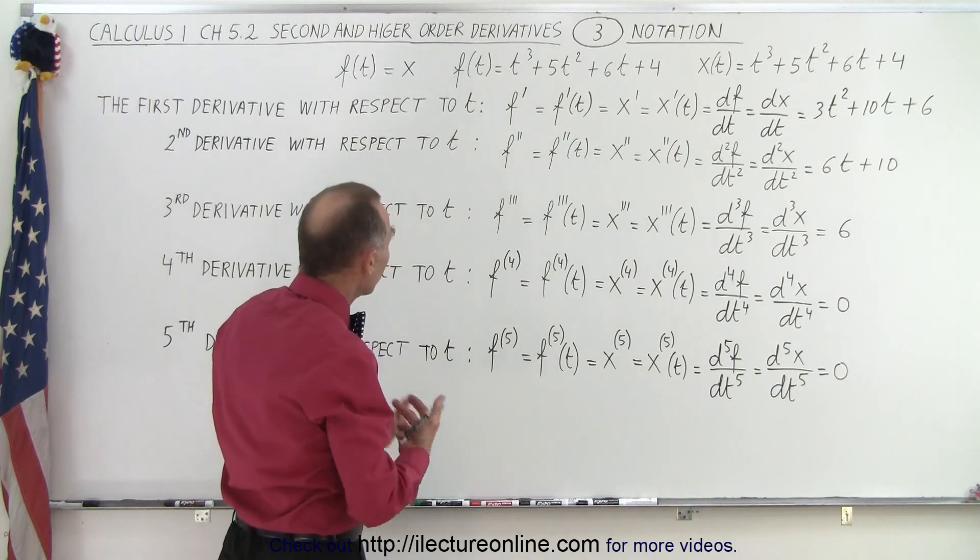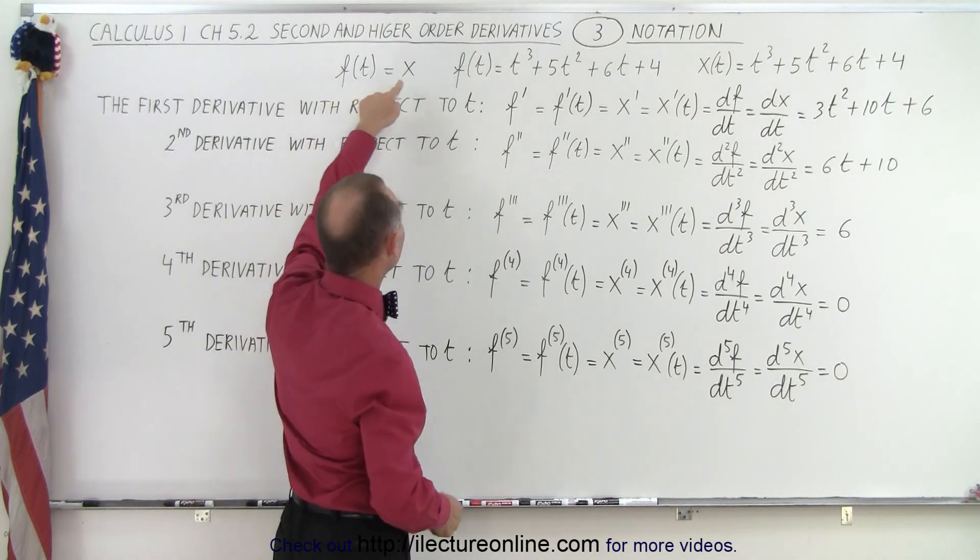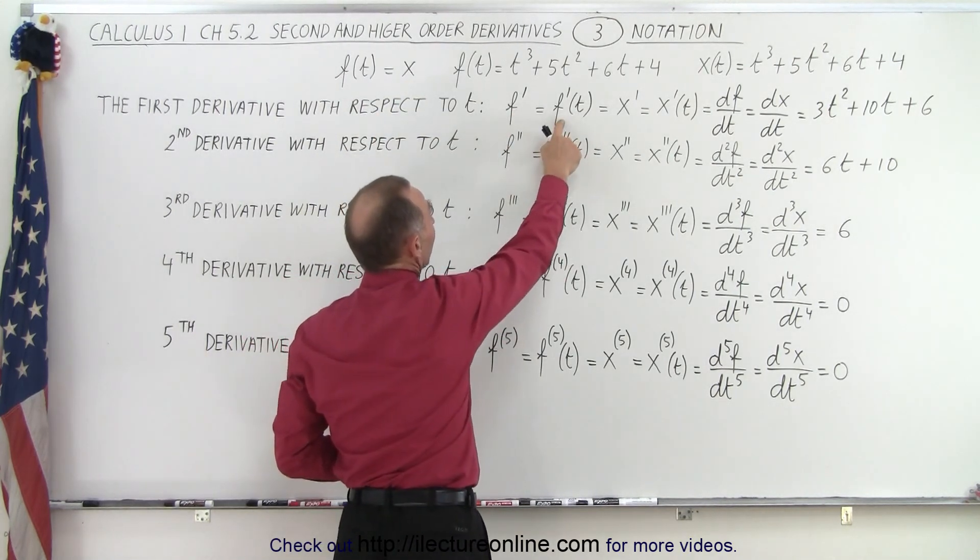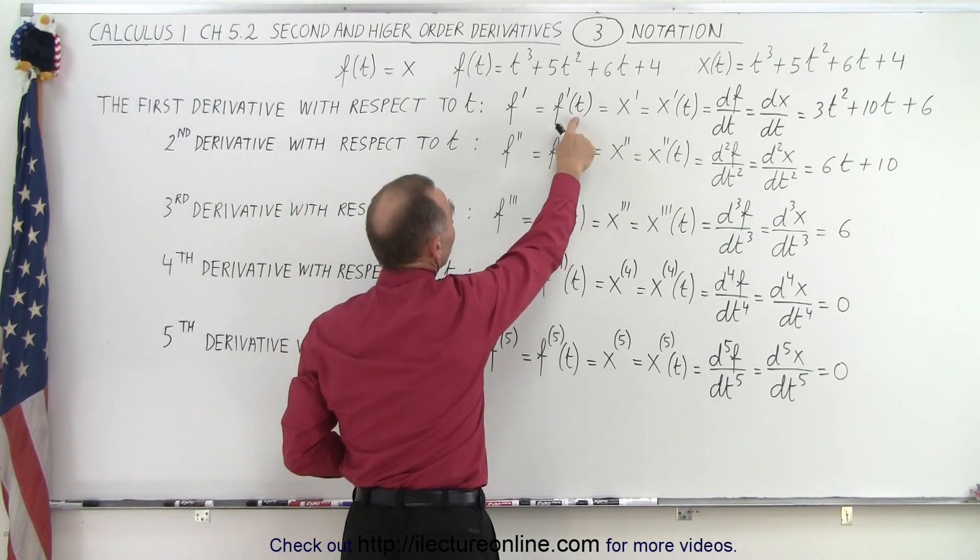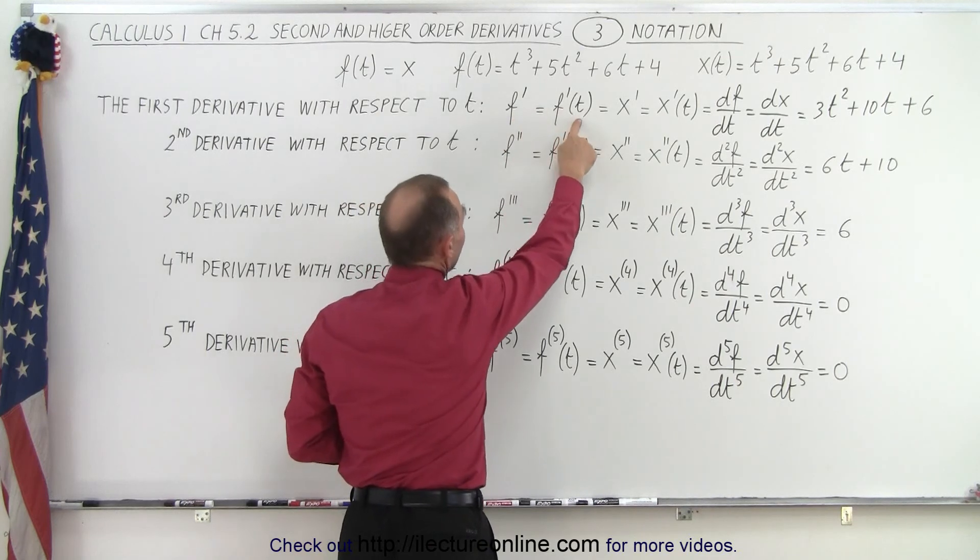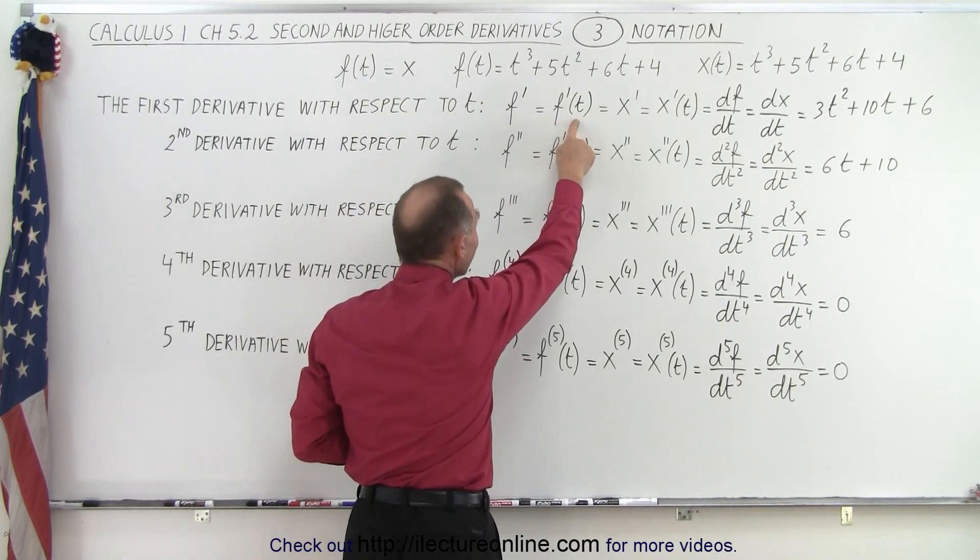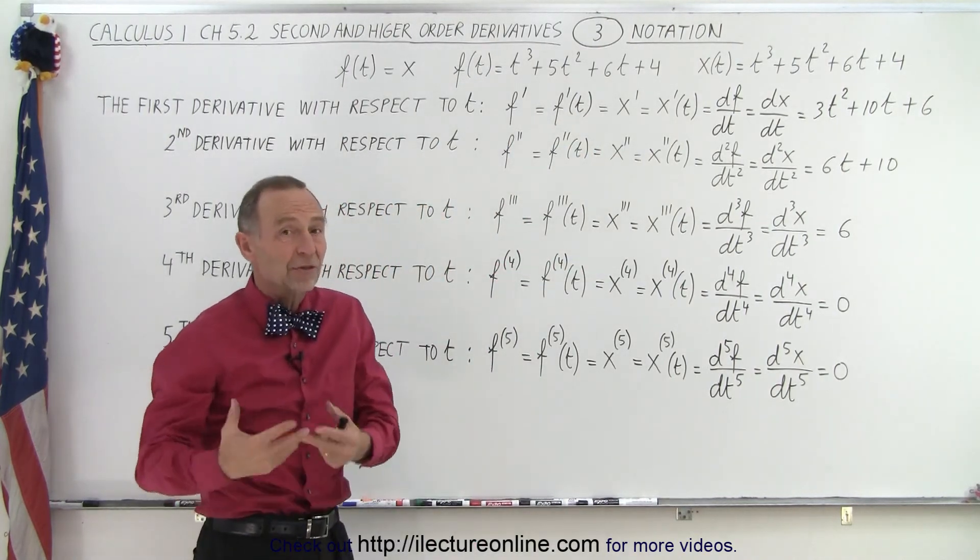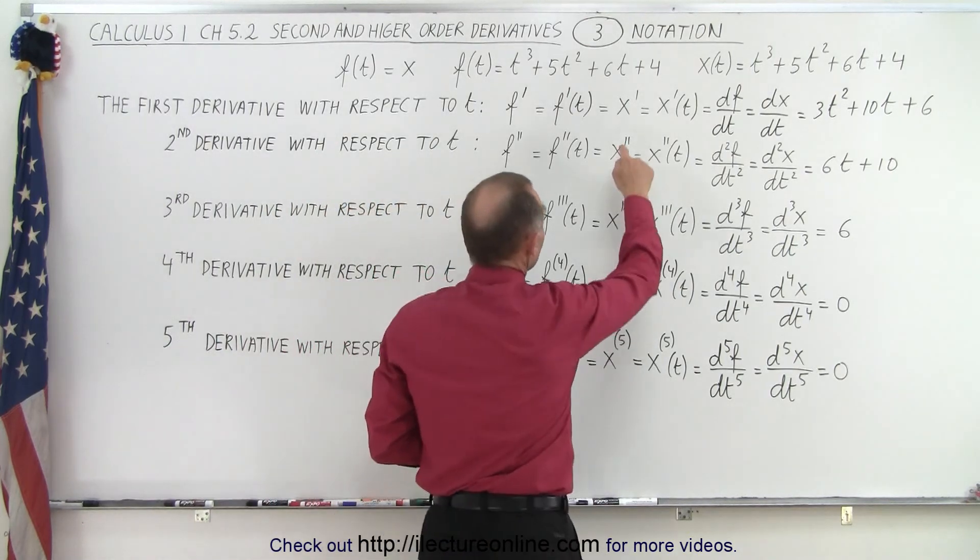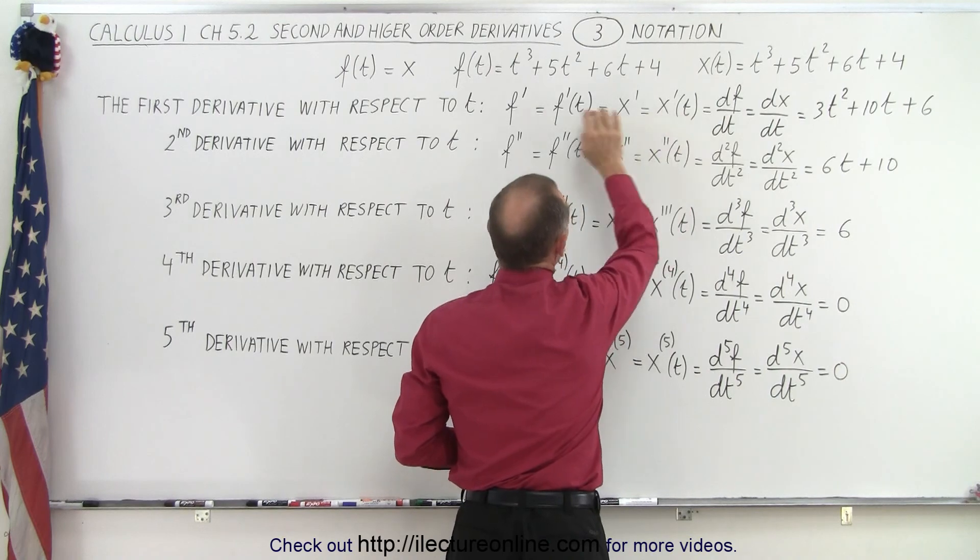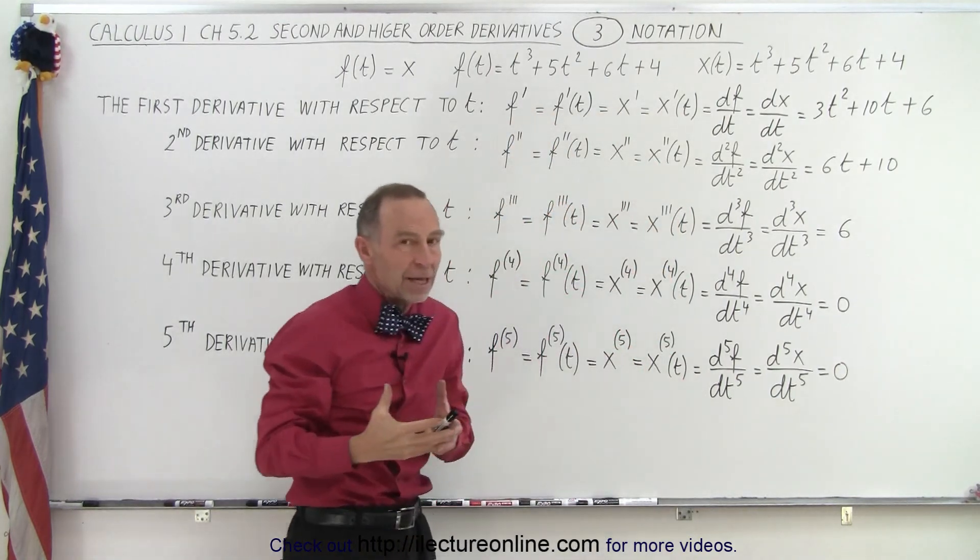So if we now take the derivative, we can take the derivative of the function or we can take the derivative of x. We can write it as f prime or f of t prime. So this is indicating, this gives you more information, that the function is of the variable t, but we don't have to write it. We can write it like this, we can write it like that, it means exactly the same thing. Or we can indicate that that function is x and so we can take it as x prime or x prime because x is a function of the variable t. And so again, all these things mean exactly the same thing. It's just a different way of writing the same thing.